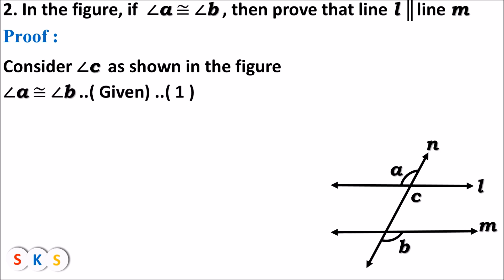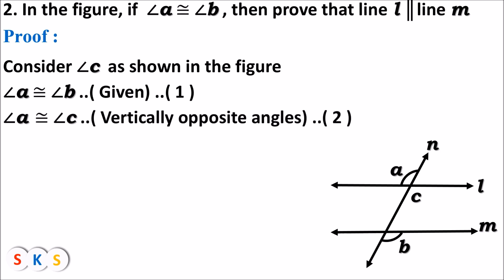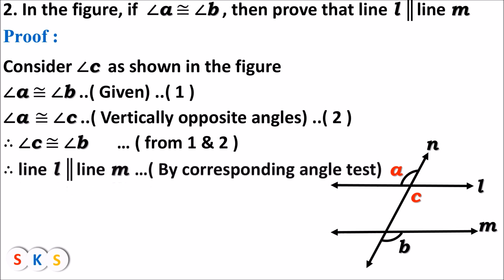Angle a is congruent to angle b — this is given. Angle a is congruent to angle c because they are vertically opposite angles. Angle a and angle c are vertically opposite angles and we know vertically opposite angles are congruent. From equations one and two, angle a ≅ angle b and angle a ≅ angle c, so angle b ≅ angle c. Looking at the figure, angle c and angle b are corresponding angles. Since corresponding angles are congruent, therefore line l is parallel to line m.